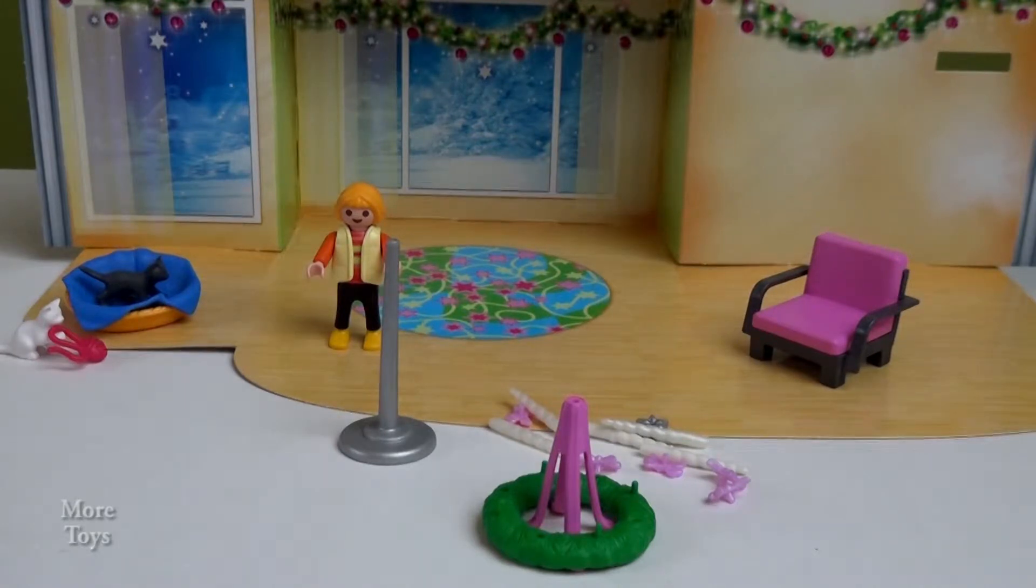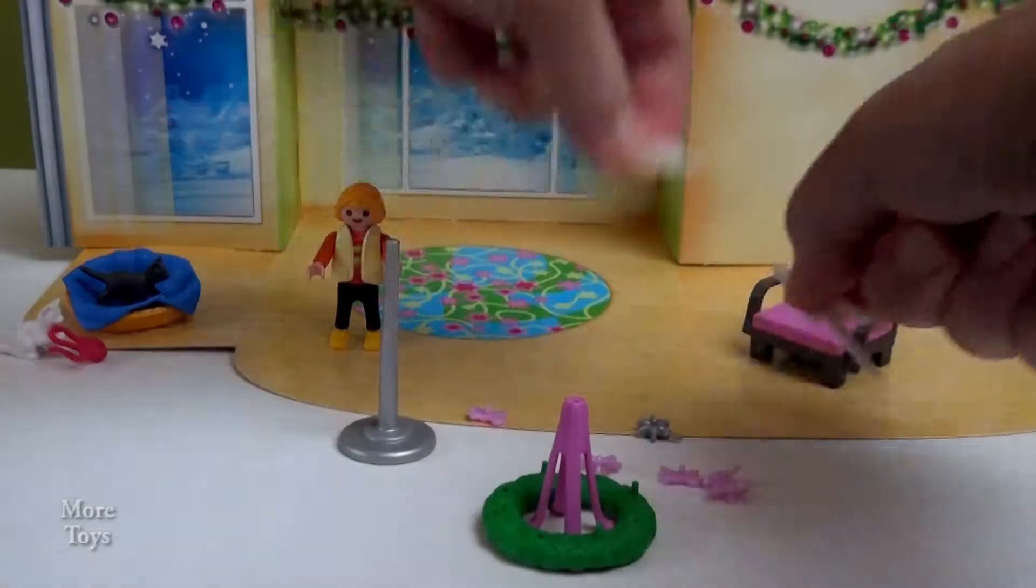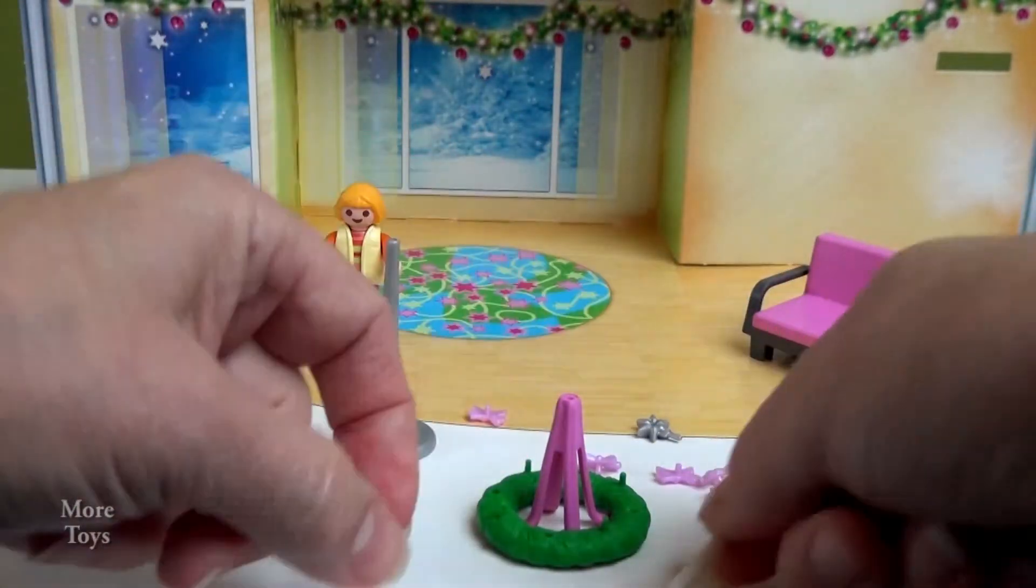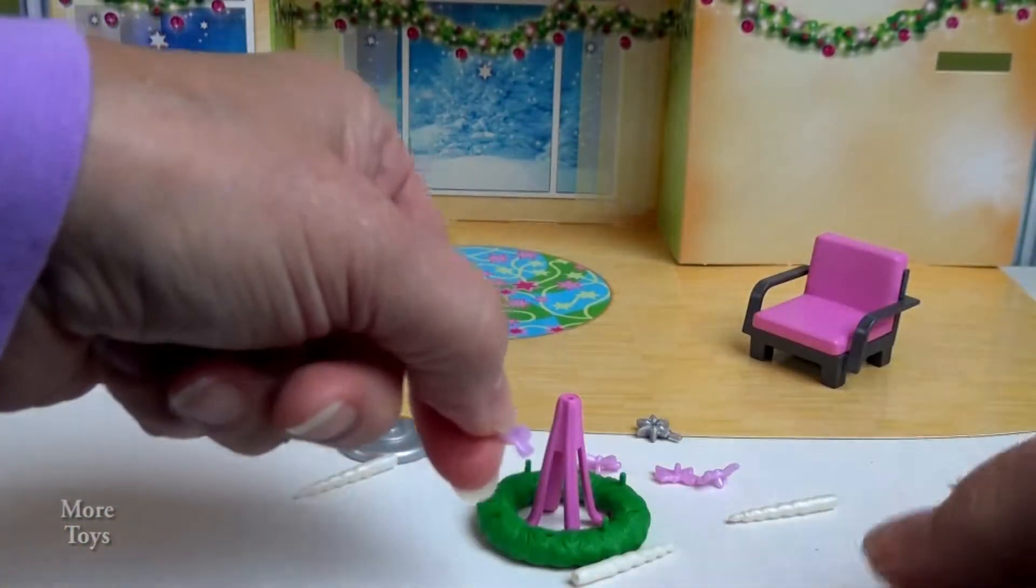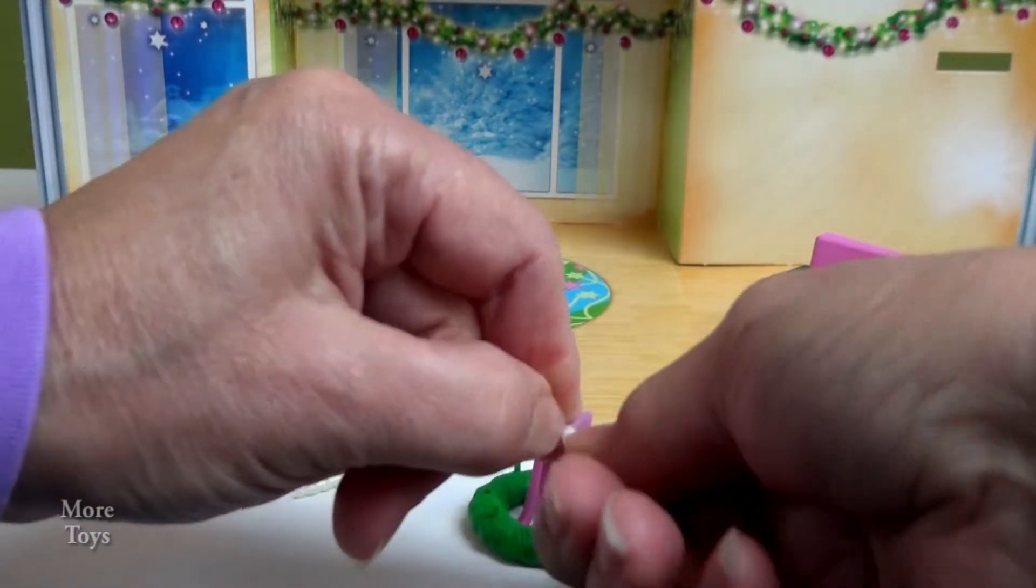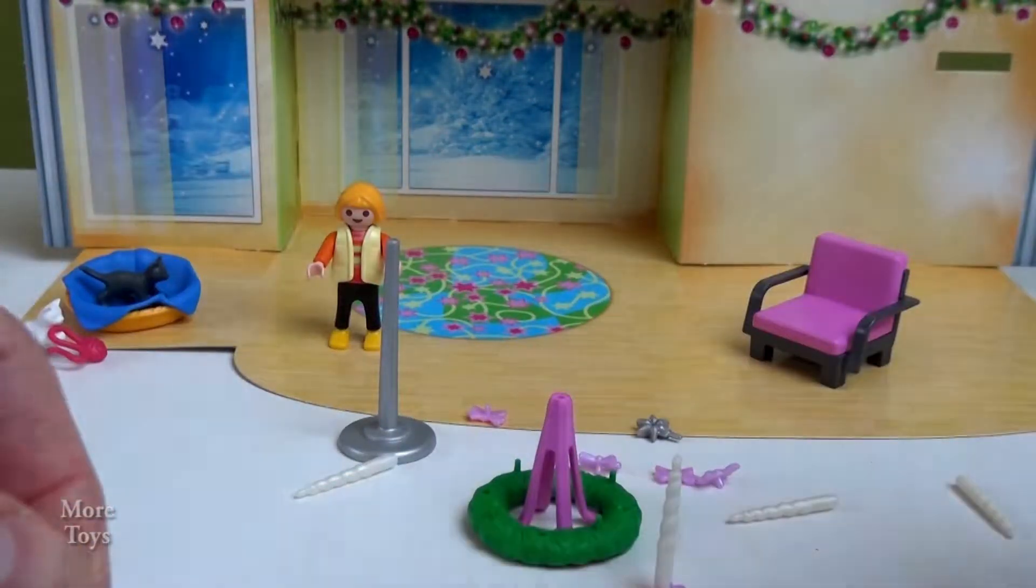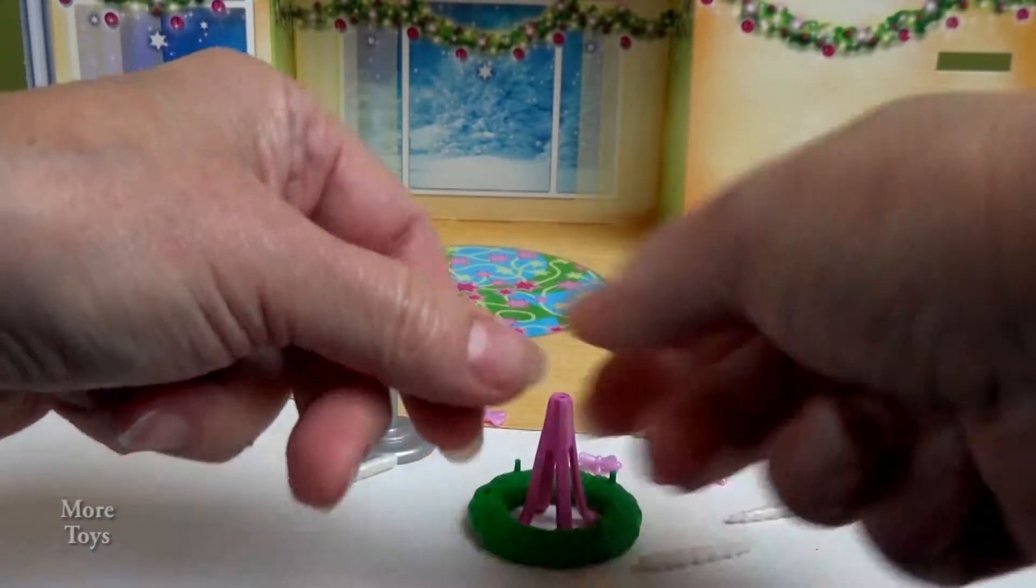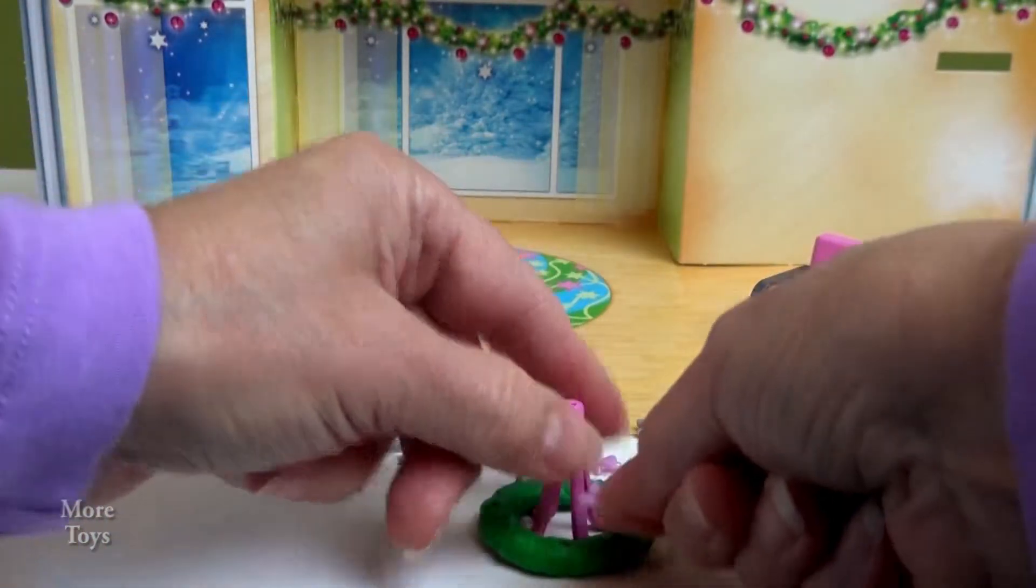And then, we've got five candles and five bows. You can see each candle has a hole on it, and each bow has a stick on it. That doesn't mean we stick the candles in the bow like that. Which you could do if you wanted to stick candles in the bow. What they intend for you to do is to stick all of these bows in the wreath.